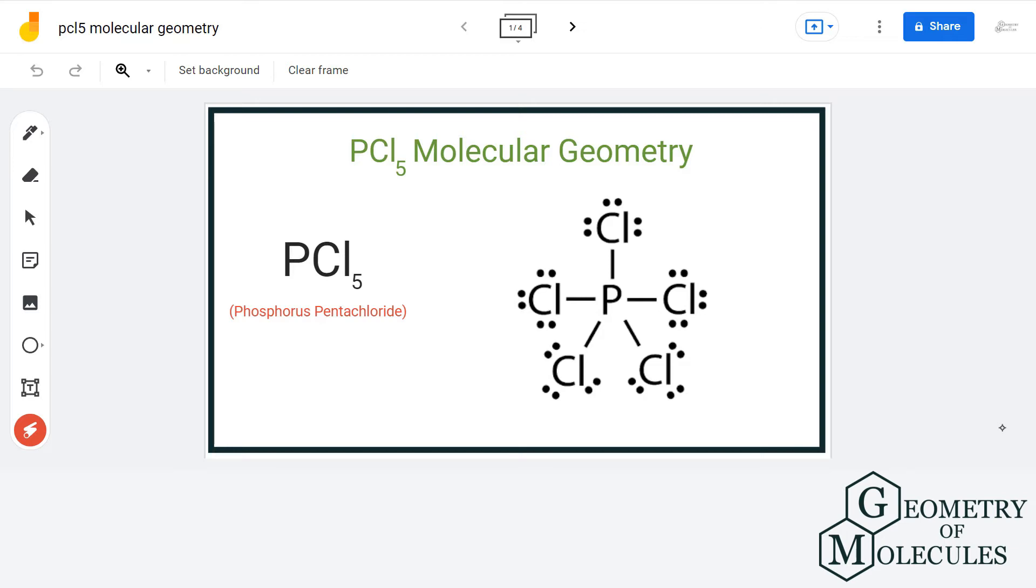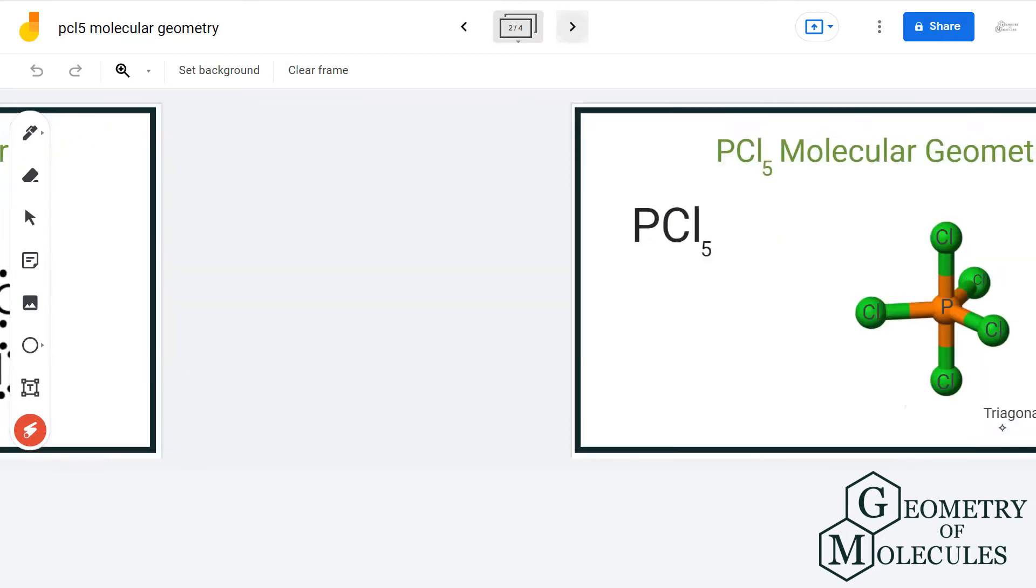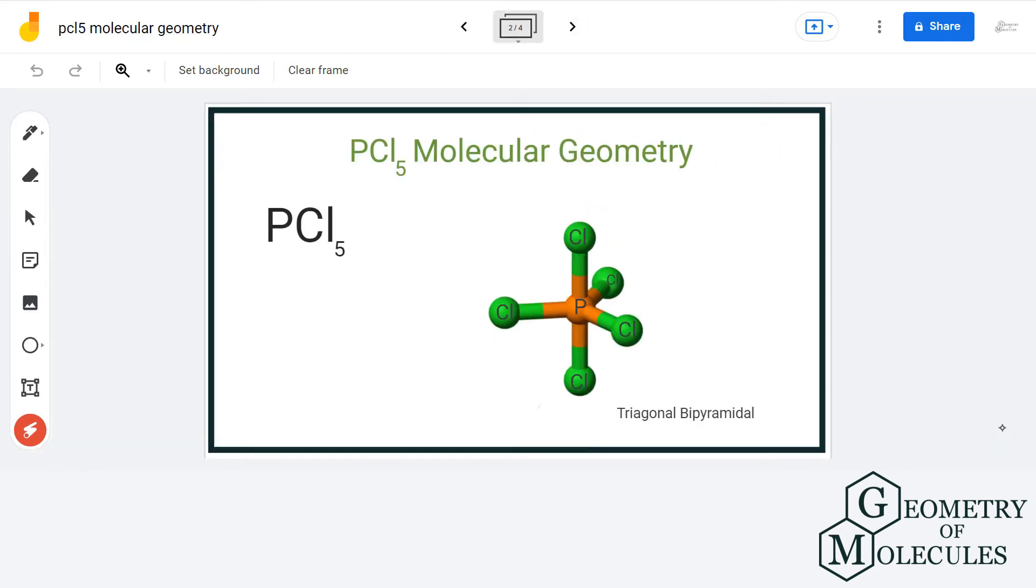If we look at the 3D structure of this molecule, we can see that PCl5 has trigonal bipyramidal molecular geometry. This shape can be understood by the name itself.